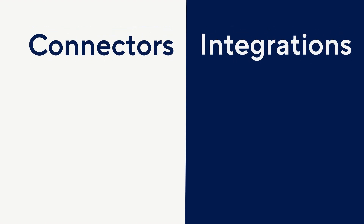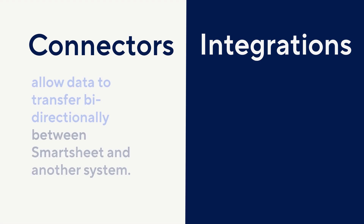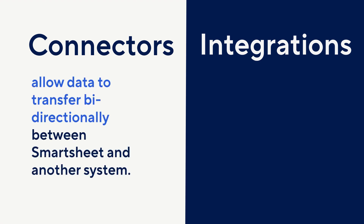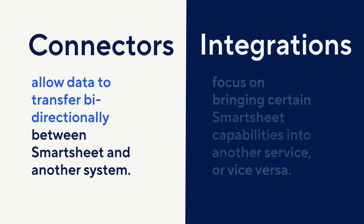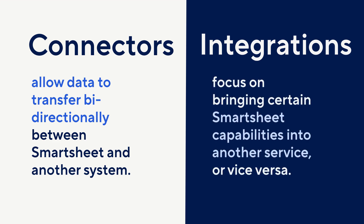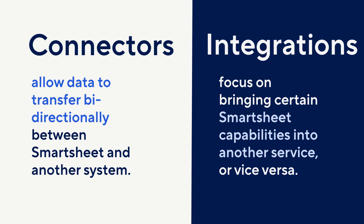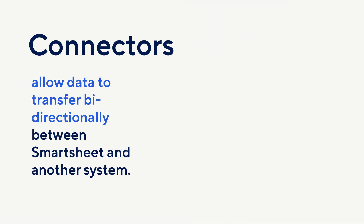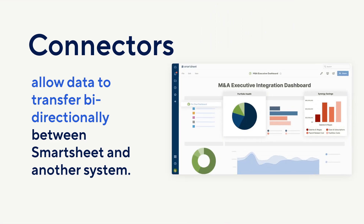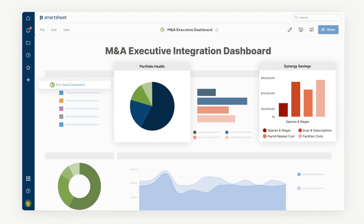Connectors and integrations are two distinct features that Smartsheet offers. Connectors allow data to transfer bi-directionally between Smartsheet and another system. Integrations focus on bringing certain Smartsheet capabilities into another service, or vice versa. First, let's take a deeper look at connectors — with connectors, data automatically syncs across platforms to ensure all stakeholders are viewing the most up-to-date information.